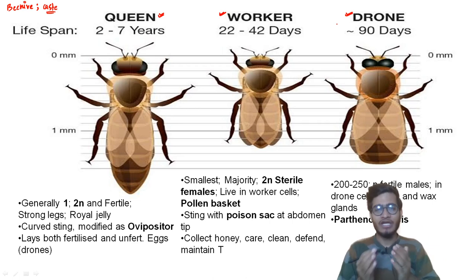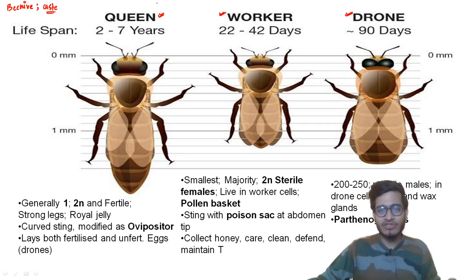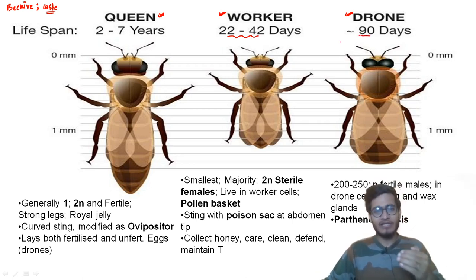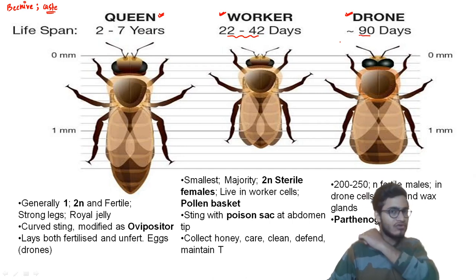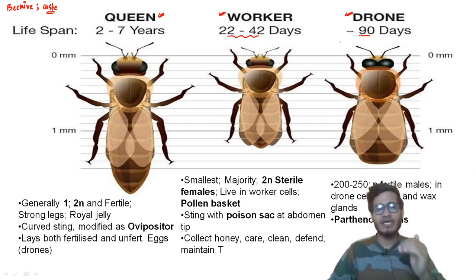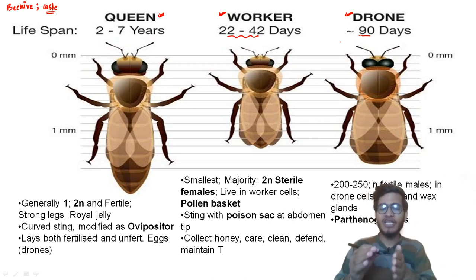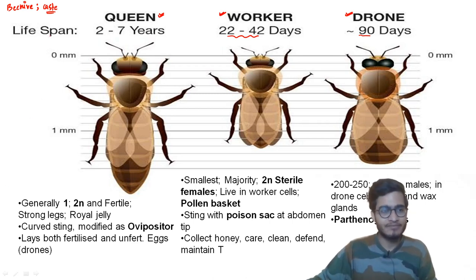The data can vary from book to book. The life pattern is quite different in different modules, so it can vary. You don't have to worry too much — if you write the data I tell you, your questions will be answered. Questions won't specifically ask about the exact lifespan of a worker or drone, so approximate data will also work.